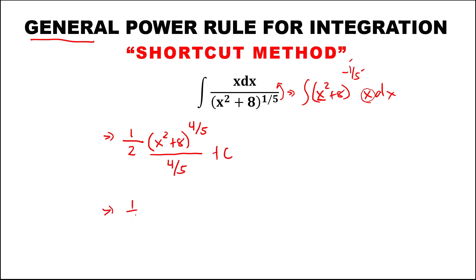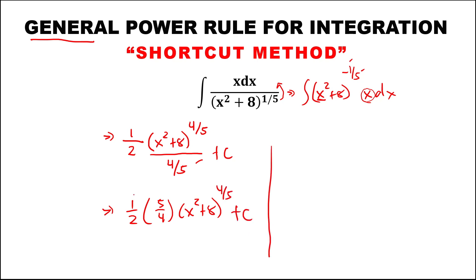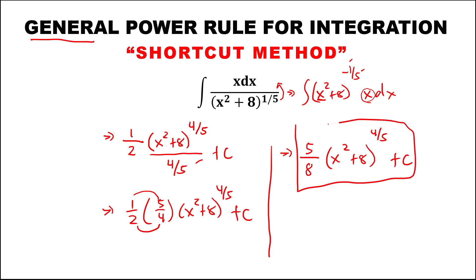To simplify, this is 1 over 2 times the reciprocal, that's 5 over 4, then (x² + 8) to the power 4 over 5, plus C. Simplifying further, this is 5 over 8, then times (x² + 8) to the power 4 over 5, plus C.